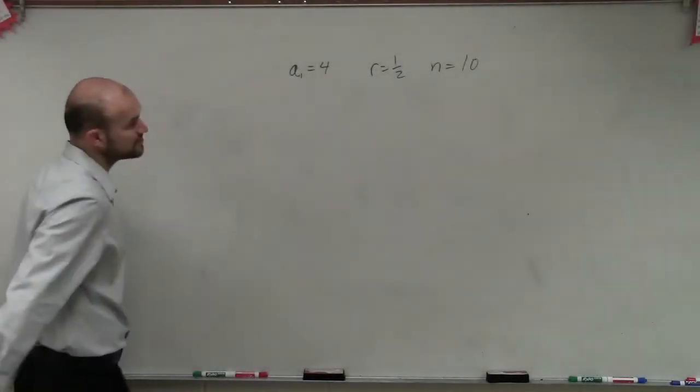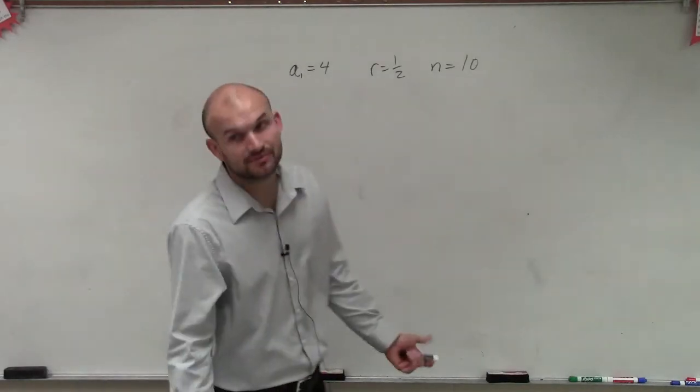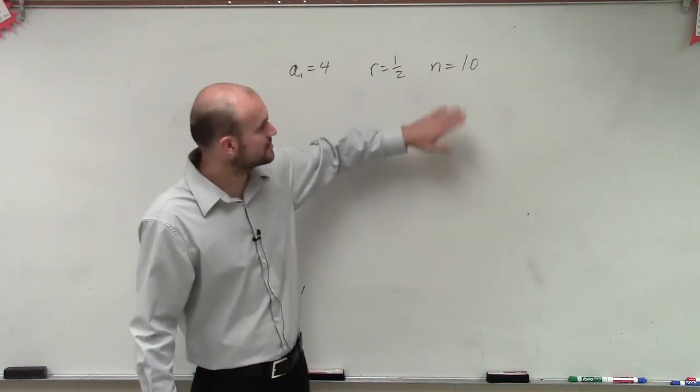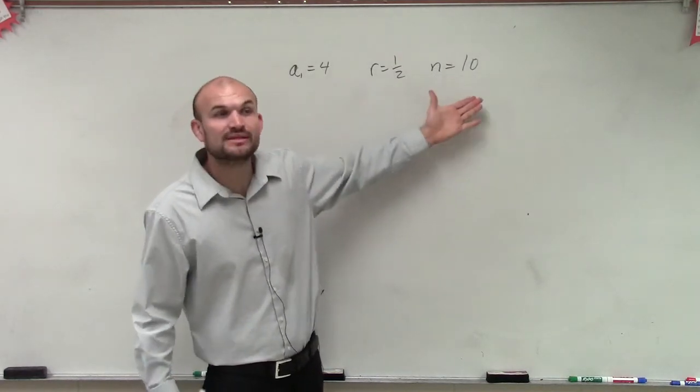So what we have is we're given a sub 1 equals 4, r equals 1 and a half, and n equals 10. And what they're asking us to do is find the indicated term of this sequence. So we want to find the nth term of this sequence.